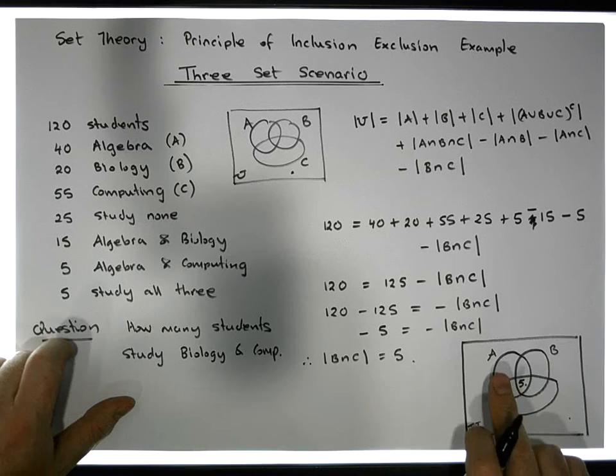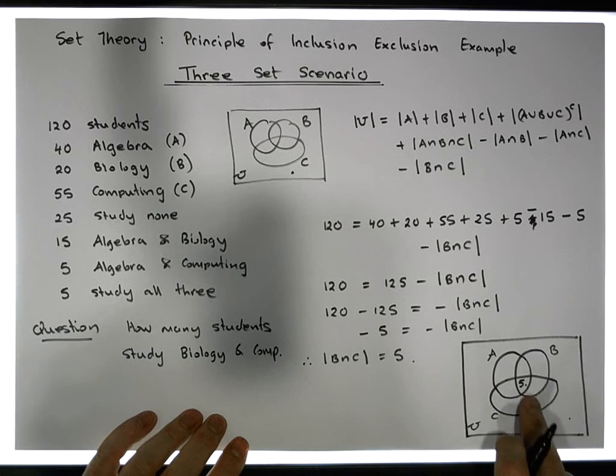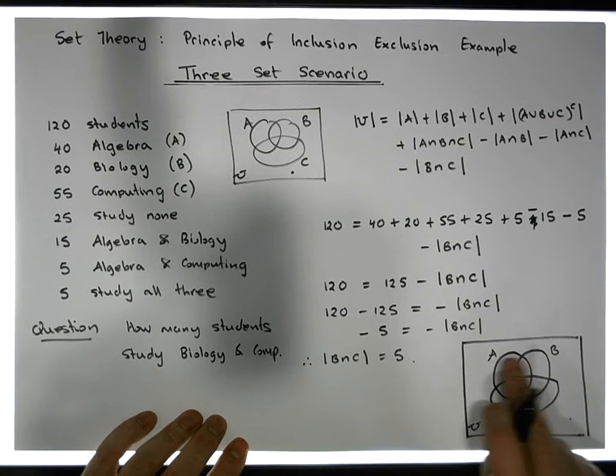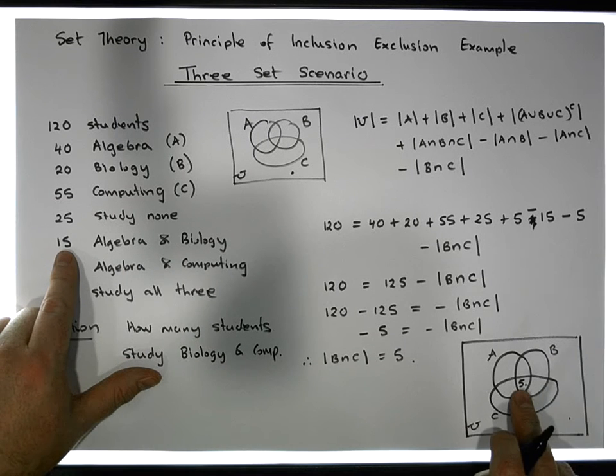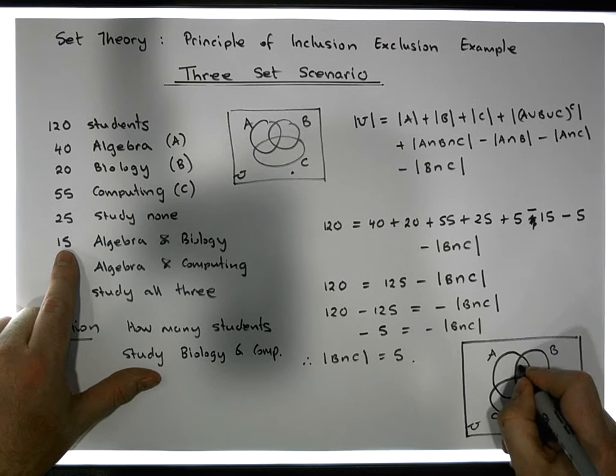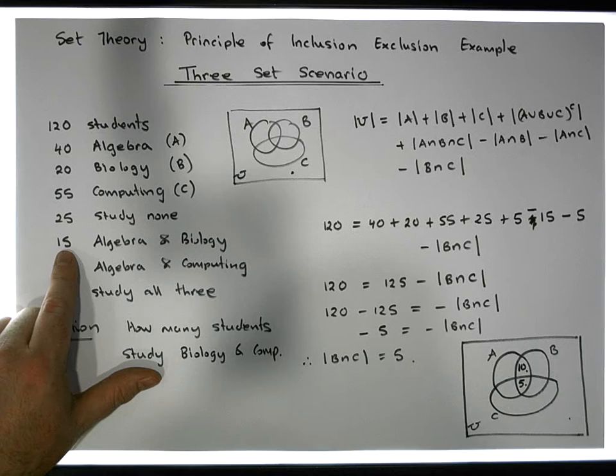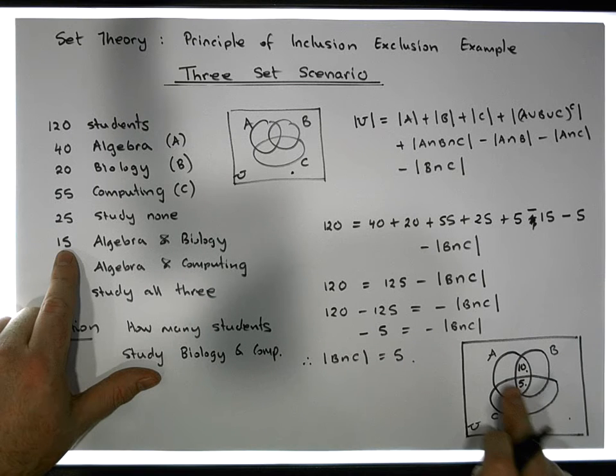Now we go for the pairwise intersections. A intersection with B, how many study algebra and biology? Well algebra and biology there's 15, but we've already accounted for five of them here, so there must be 10 in that part of the room. Now we have 15 in total in A intersection with B.